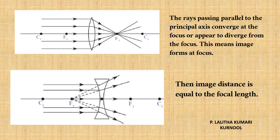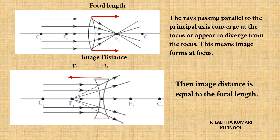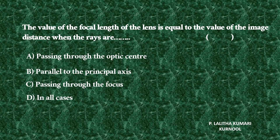So, the image distance is equal to the focal length. The correct answer is Option B — parallel to the principal axis. Thank you.